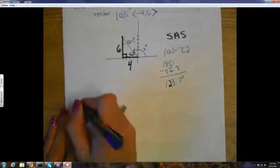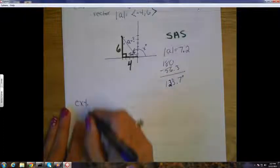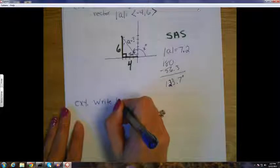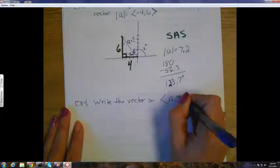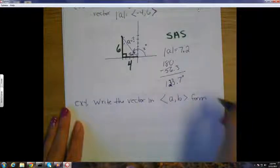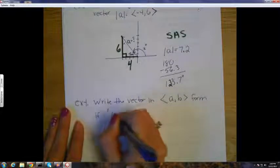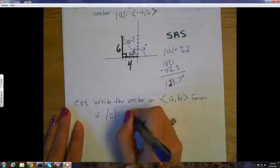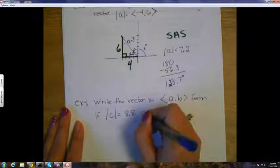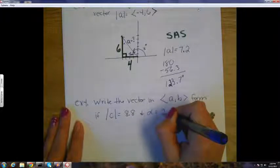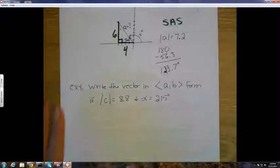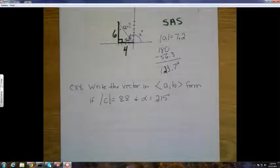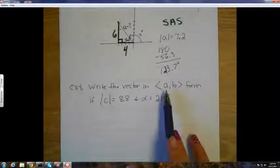Okay, let's go backwards from this one. Write the vector in pointed bracket A, B form if the magnitude of vector C is 8.8 and the direction is 215 degrees. I could use alpha for the Greek letters, any angle measure. The Greeks like to use those Greek letters for angle measures. I could use theta, I can use anything. Remember the A, B is like an ordered pair. I'm looking for the ordered pair, the endpoint of this vector.